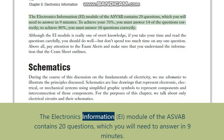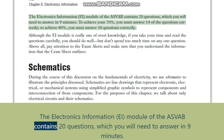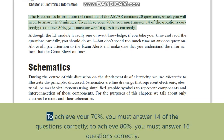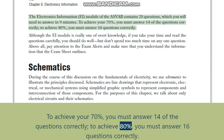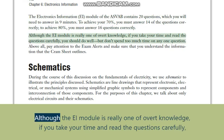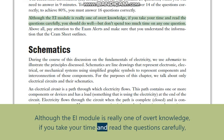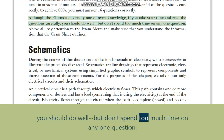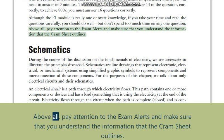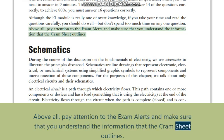The Electronics Information (EI) module of the ASVAB contains 20 questions which you will need to answer in nine minutes. To achieve 70 percent you must answer 14 questions correctly; to achieve 80 percent you must answer 16 questions correctly. Although the EI module is really one of overt knowledge, if you take your time and read the questions carefully you should do well, but don't spend too much time on any one question. Above all, pay attention to the exam alerts and make sure that you understand the information that the cram sheet outlines.